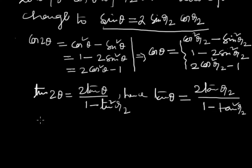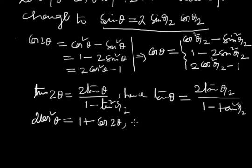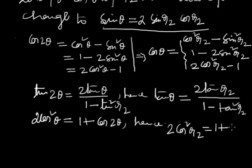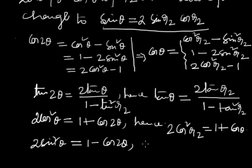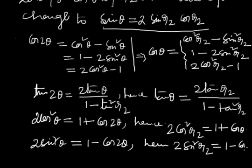Again, 2cos²θ equals 1 plus cos 2θ, so 2cos²(θ/2) equals 1 plus cos θ. And 2sin²θ equals 1 minus cos 2θ, so in sub-multiple angles, 2sin²(θ/2) equals 1 minus cos θ.